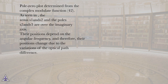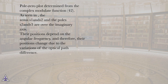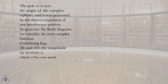As seen in the plot, the zeros S1, S2, and S3 are over the imaginary axis. Their positions depend on the angular frequency, and therefore their positions change due to the variations of the optical path difference. The pole S1 is over the origin of the complex s-plane, and it was generated by the direct component of the interference pattern.